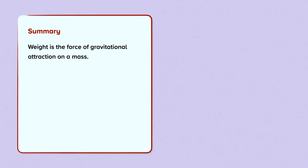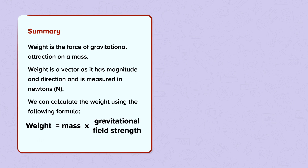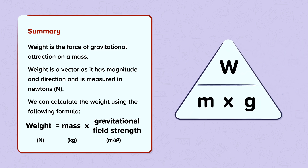Summary. Weight is the force of gravitational attraction on a mass. Weight is a vector as it has magnitude and direction, and is measured in newtons. We can calculate weight using the following formula: weight is equal to mass times gravitational field strength.